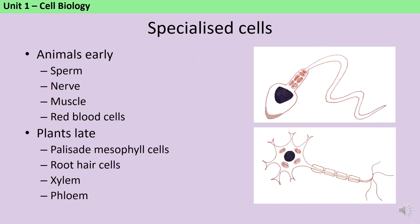One big difference between animals and plants is the point at which this specialisation occurs. In animals, specialisation happens at a very early stage, so by the time that an animal is born, most of the cells in the body are already specialised to a particular type. Examples of specialised cells in animals include sperm cells, nerve cells, muscle cells and red blood cells. In plants, this specialisation happens much, much later, and throughout their lifetime, plants retain specialised cells called meristems, which are able to differentiate to form lots of different types of specialised cell. Examples of specialised cells in plants include palisade mesophyll cells, root hair cells and xylem and phloem cells.